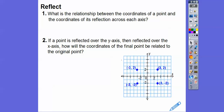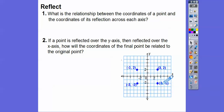So if we reflected the original point over the y-axis, this three, negative two became negative three, negative two. The negative two didn't change — the y's didn't change — but the x's changed. So when we go across the y-axis, the x-coordinates change.